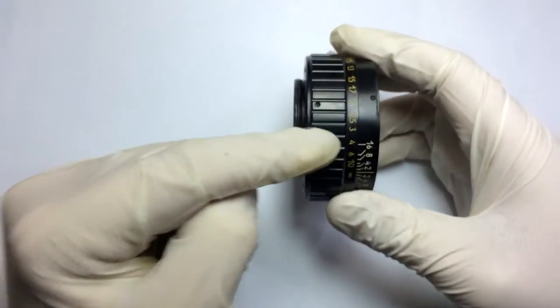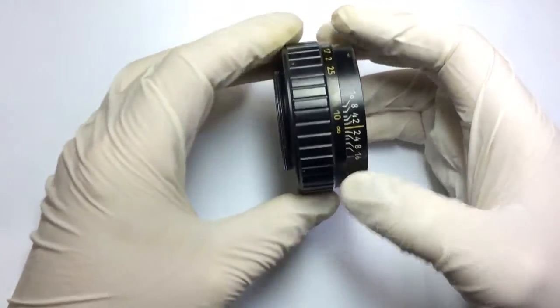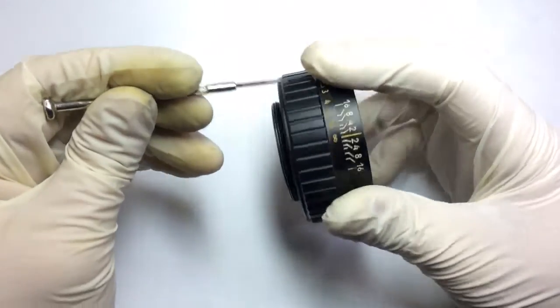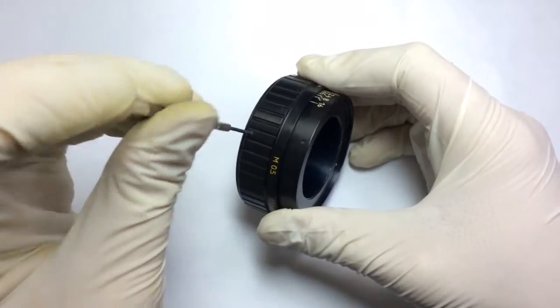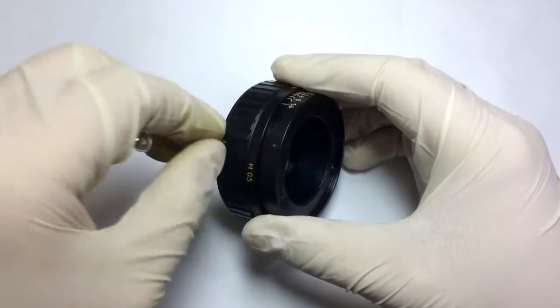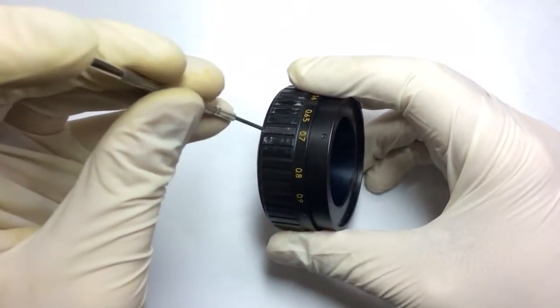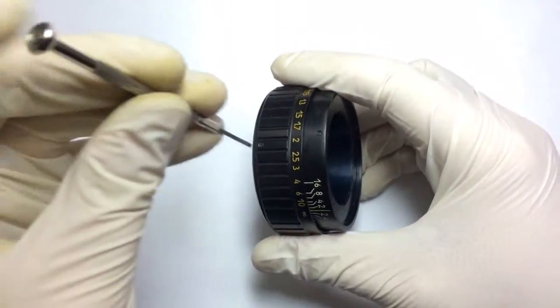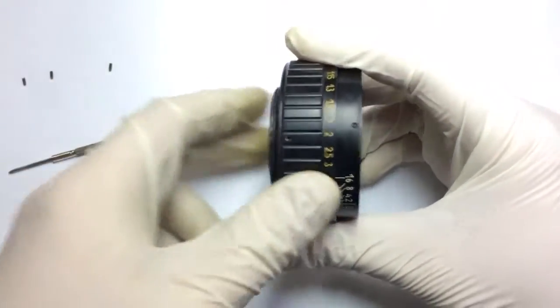Now we need to remove this ring. Just focus it on infinity in this position and using a screwdriver, there are three little screws. You need to remove all of them. One, two, and three.